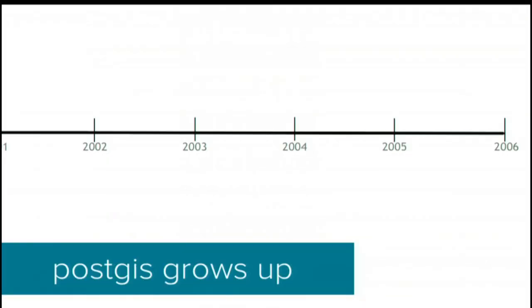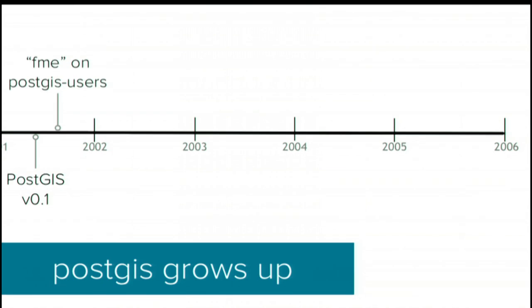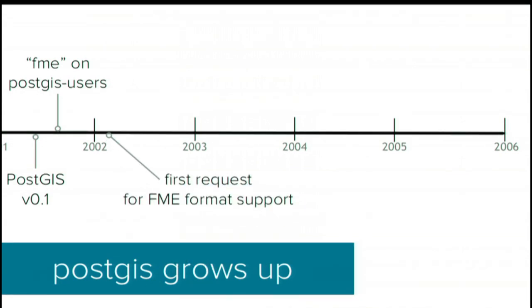The first release of PostGIS was May 2001. The first reference to FME on the PostGIS users list was July 27th, 2001 — so already in our sights. In January of 2002, my business partner wrote to Dale at Safe and told him about PostGIS and wondered if Safe would support it. At that point we were already using PostGIS in production for data management, actually working for Customer Zero — Mark Sondheim at Geographic Data BC. And we were already FME users. So having full FME support for PostGIS would have been very handy.